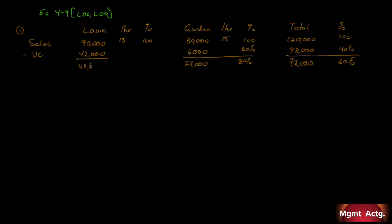Lawn's contribution margin is $48,000, and $48,000 of $90,000 gives the odd figure of 53.33%, with variable costs at 46.67%. This is the first time we've seen odd numbers in these problems. In textbooks you often get round numbers, but in the real world you should get used to the messiness of decimal places — that's the reality.